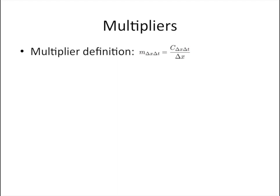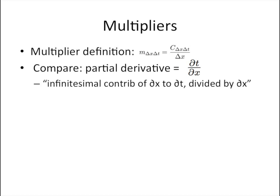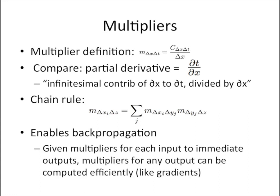We now introduce the concept of multipliers, which will come in handy when we do our backpropagation. The multiplier for x to t is defined as the contribution of x to t divided by the difference from reference of x. Compare this to the definition of a partial derivative, which is the infinitesimal change in t caused by x divided by the infinitesimal change in x. Just like partial derivatives, multipliers satisfy a chain rule: the multiplier of xi to z can be found by taking the product of the multipliers for xi to yj and yj to z, and summing over all the intermediate neurons yj. Given the multipliers for each input to its immediate outputs, you can use the chain rule to find the multipliers for any input to any output.